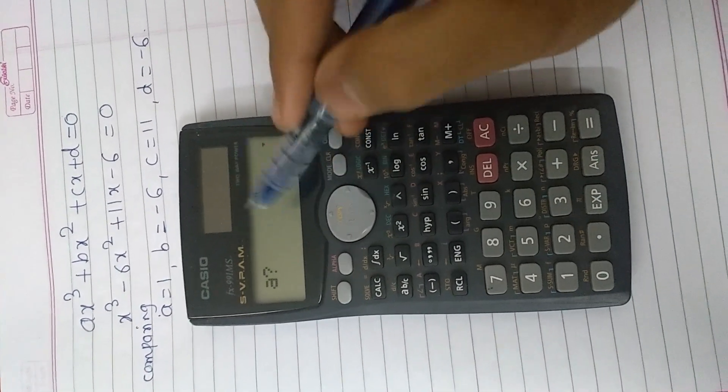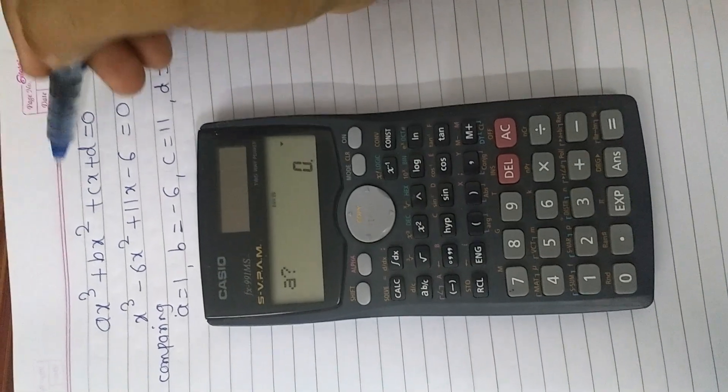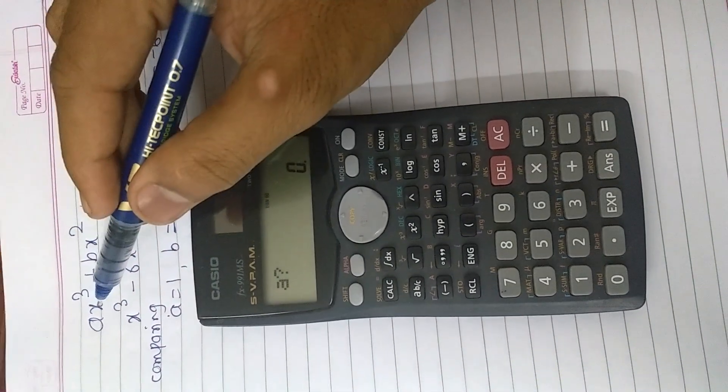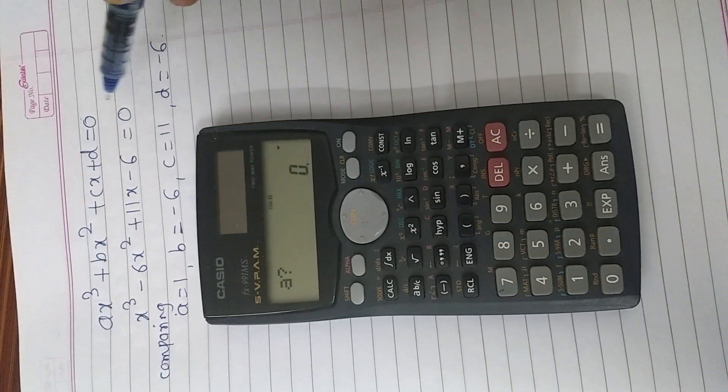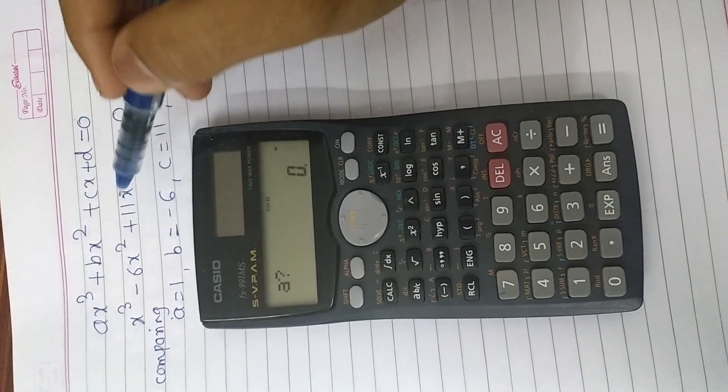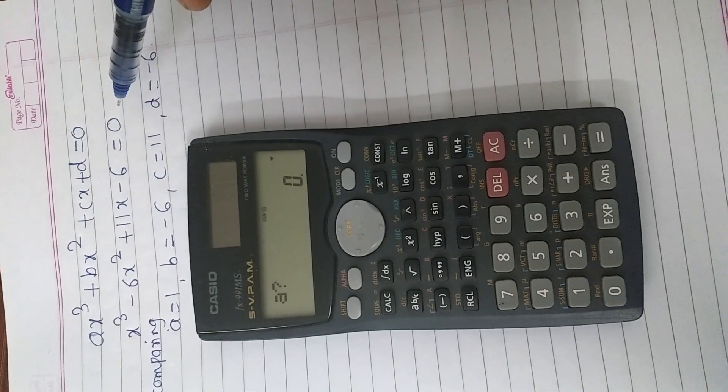Then we will see a question mark. See this is the general form of the cubic equation: ax cube plus bx square plus cx plus d is equal to 0. I have taken one example: x cube minus 6x square plus 11x minus 6 is equal to 0.